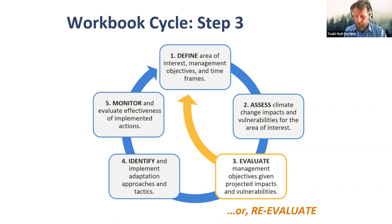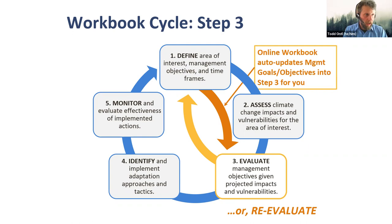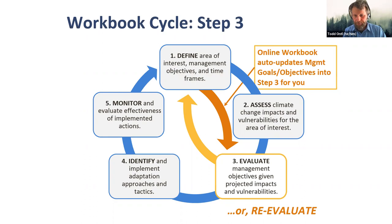The workbook cycle shows that at step three, you may need to jump back to step one and modify your objectives. The workbook is really designed to be iterative — it's designed for you to jump around between the various steps and add more information as you think of it. If you go back and redefine a goal or objective, it automatically carries that forward to step three, so you don't need to change anything else in the workbook if you update your step one goals and objectives.